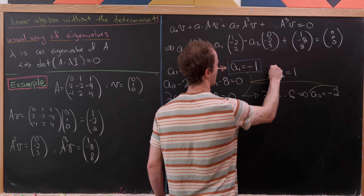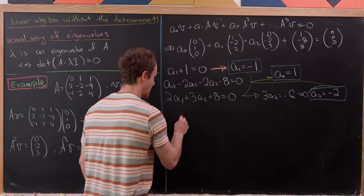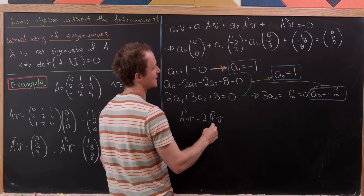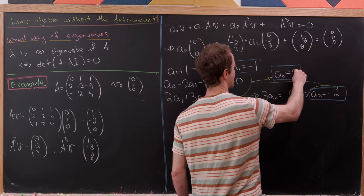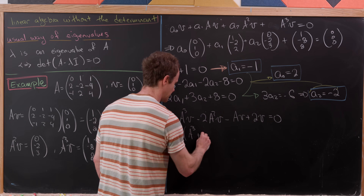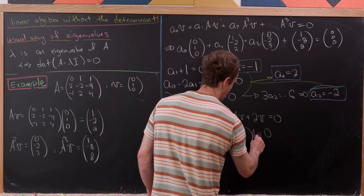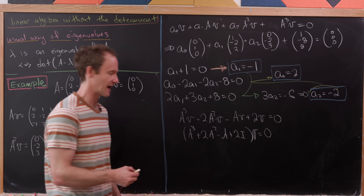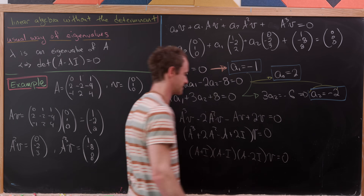With those coefficients, we can rewrite the equation as: A³V − 2A²V − AV + 2V = 0. Factoring V out on the right: (A³ − 2A² − A + 2I)·V = 0. Now factor that cubic polynomial — you could use the rational root theorem — and it factors as: (A + I)(A − I)(A − 2I)·V = 0.